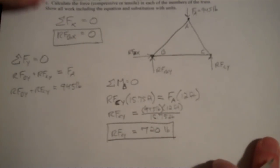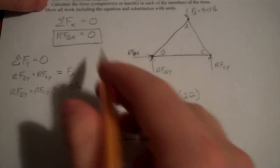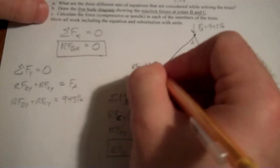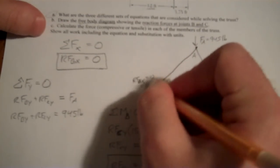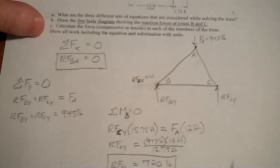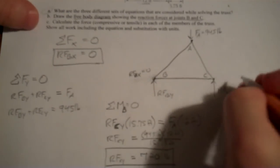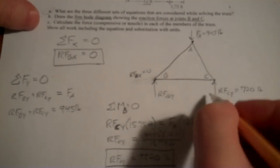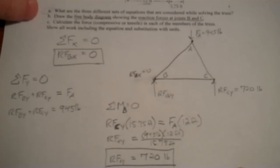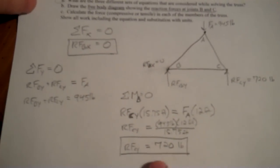So, two down. I know RF,C,Y. I know RF,B,X is equal to 0. So, I can actually erase that vector from my free body diagram. RF,C,Y is equal to 720. It's a positive, so I chose the correct direction originally. And now we need RF,B,Y.